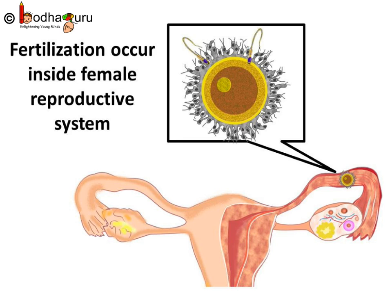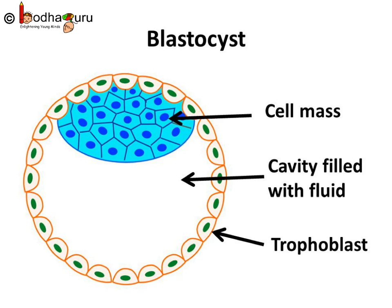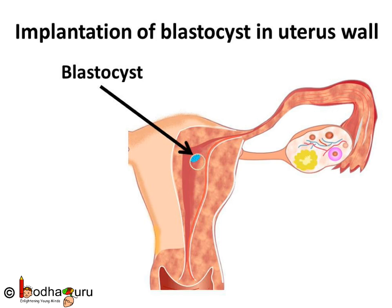Now let us understand the reproduction process in human beings in detail. In human beings, fertilization takes place inside the female reproductive system, so it is called internal fertilization. The zygote is formed during fertilization. Then the zygote cell divides rapidly and forms a ball of cells called a blastocyst — just a sphere made of cells, with no organs developed yet. The blastocyst has a diameter of about 0.1 to 0.2 mm and comprises 200 to 300 cells. The blastocyst then gets attached to the inner wall of the uterus.